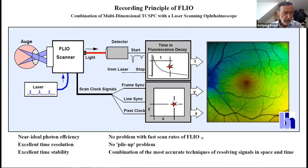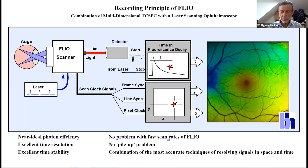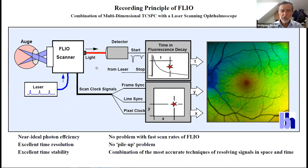There is no problem with the fast scan rates of FLIO. The scanner scans something like 16 or 20 frames per second, and every frame is scanned by 500 pixels, so the pixel time is far shorter than a microsecond—probably 100 nanoseconds or so. When we detect the photon, we look where the scanner was and when the photon came. This process is independent of scan speed, and in fact it is a combination of the most accurate techniques for resolving signals in space and in time.